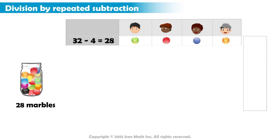Across the margin, we write one, to indicate that each player got one marble.